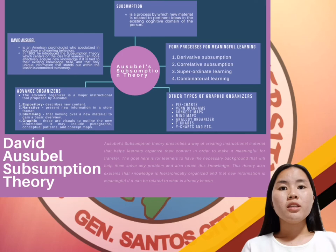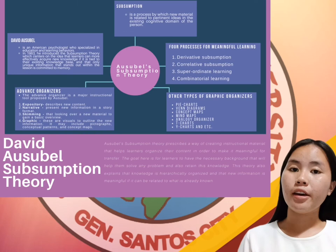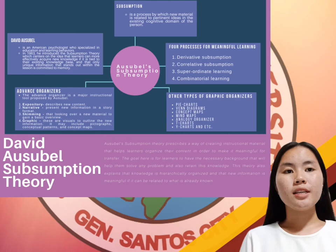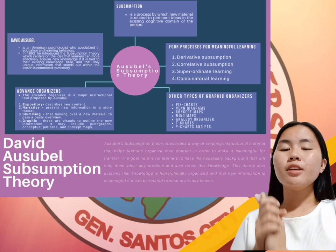Other types of graphic organizers include pie charts, Venn diagrams, mind maps, concept maps, analogy organizers, T-charts, Y-charts, and more. The overall view of this mind map is to provide a summary of Ausubel's Subsumption Theory and how it prescribes a way of creating instructional material to help learners organize their learning ideas.